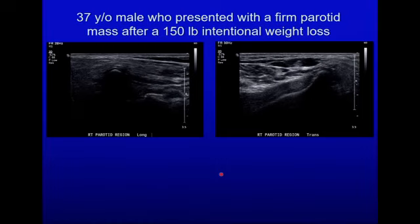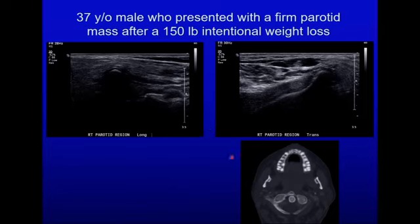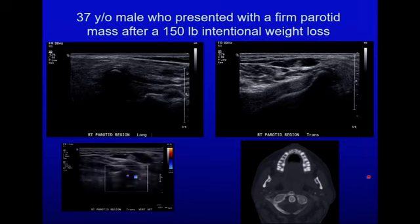Another problem-solving example: a 37-year-old male with no history of cancer who reported a firm parotid mass after a 150-pound intentional weight loss. Ultrasound in transverse and longitudinal views showed an echogenic smooth interface with complete acoustic shadowing below it. It looks like bone because in this case it is bone — it is C1. A prior neck CT, also obtained to evaluate this mass but reported as normal, showed a little offset of C1, asymmetrically positioned to the right. We swept up and down and saw the vertebral artery curling around the edge of C1, confirming the finding. No biopsy was performed and the patient was reassured.